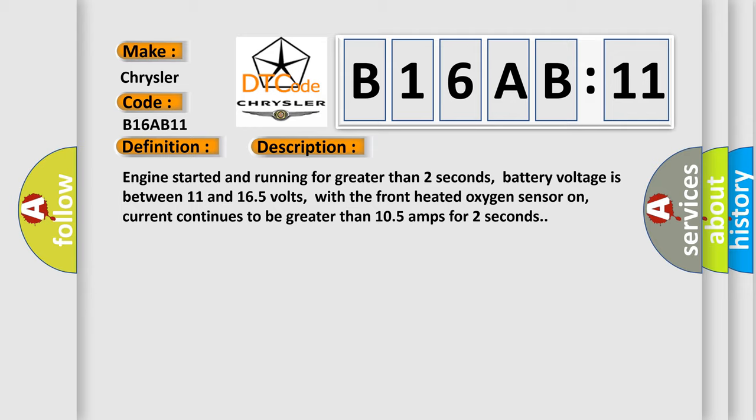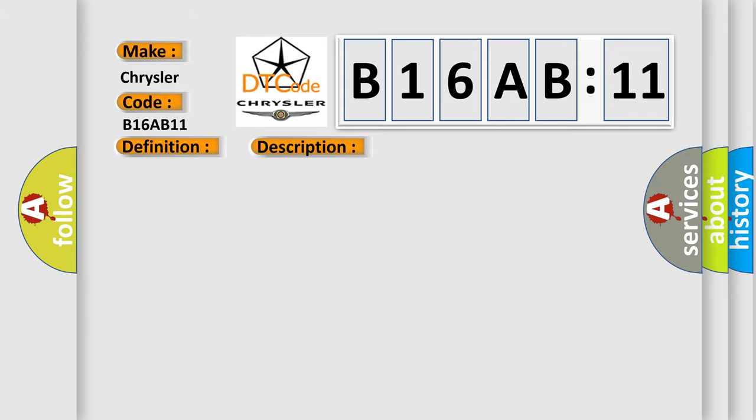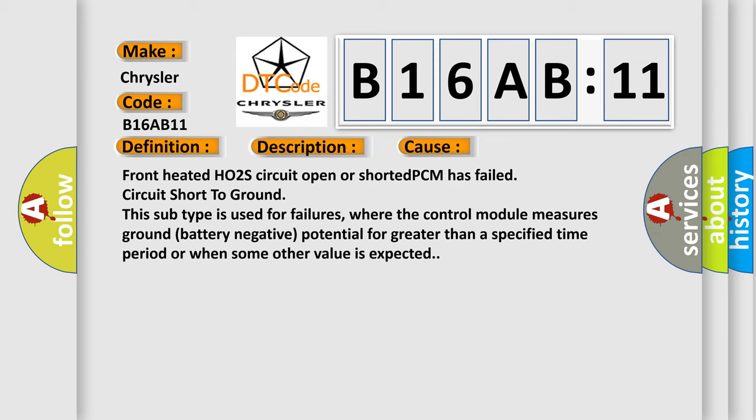This diagnostic error occurs most often in these cases. Front heated HO2S circuit open or shorted PCM has failed circuit short to ground. This subtype is used for failures where the control module measures ground battery negative potential for greater than a specified time period or when some other value is expected.